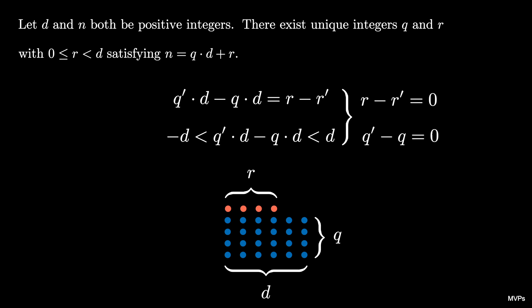This means that r and q are unique. This concludes our proof of the theorem known as the division theorem or the division algorithm.